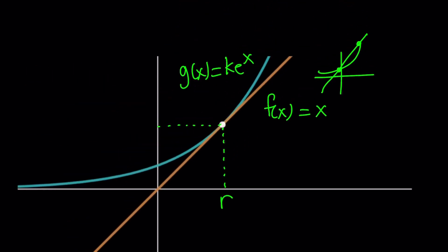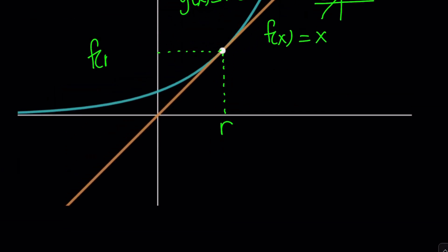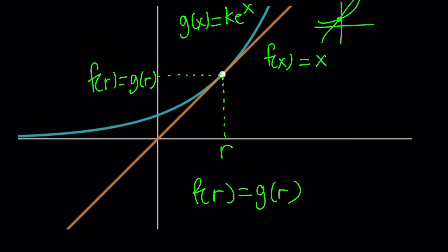Because they intersect, f of r and g of r needs to be the same, right? Think about it. Their image must be the same, or the outputs. So f of r equals g of r. That's the first condition, but we do have another condition, and that condition comes from the tangency. Because these graphs are tangent, and the tangent line happens to be f of x, the slope of the tangent line at r needs to equal the slope of the line. Make sense?